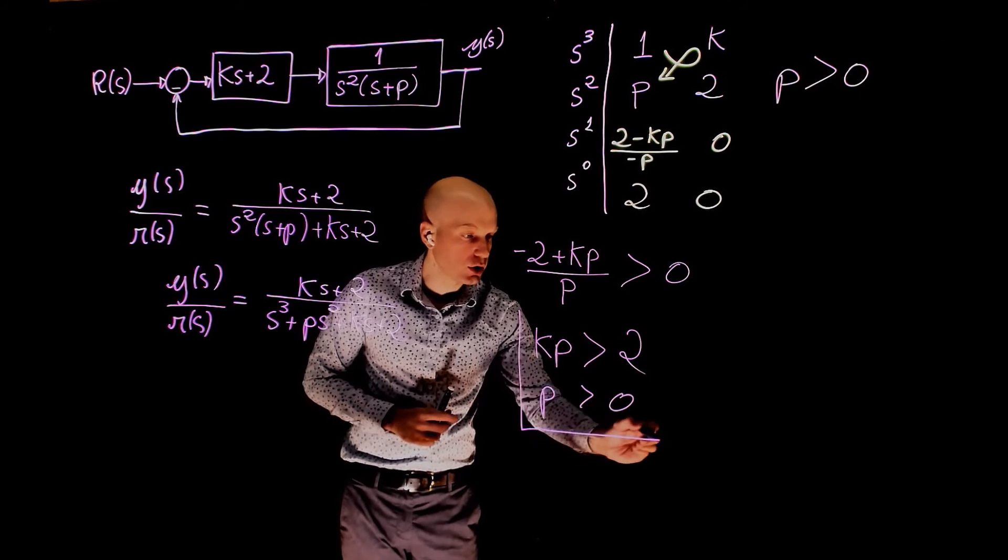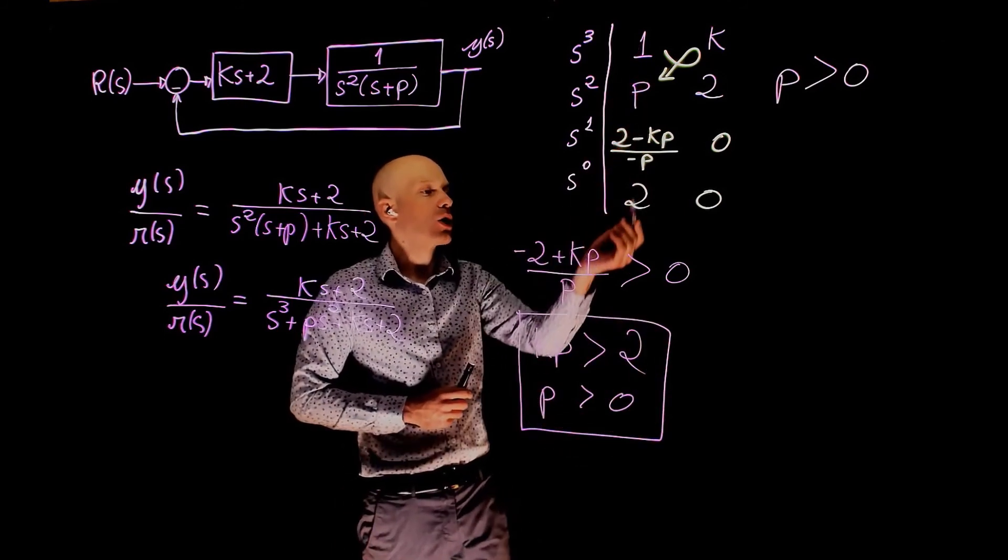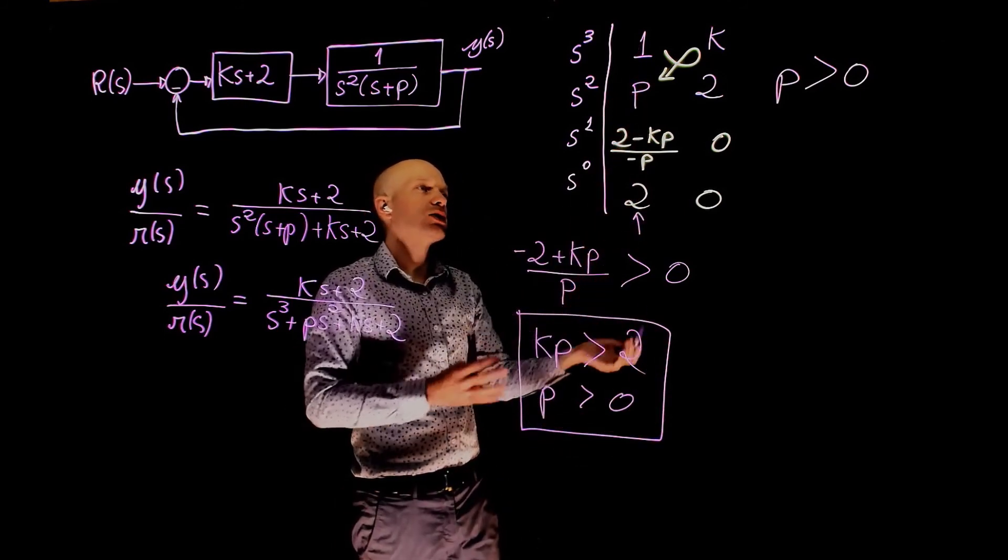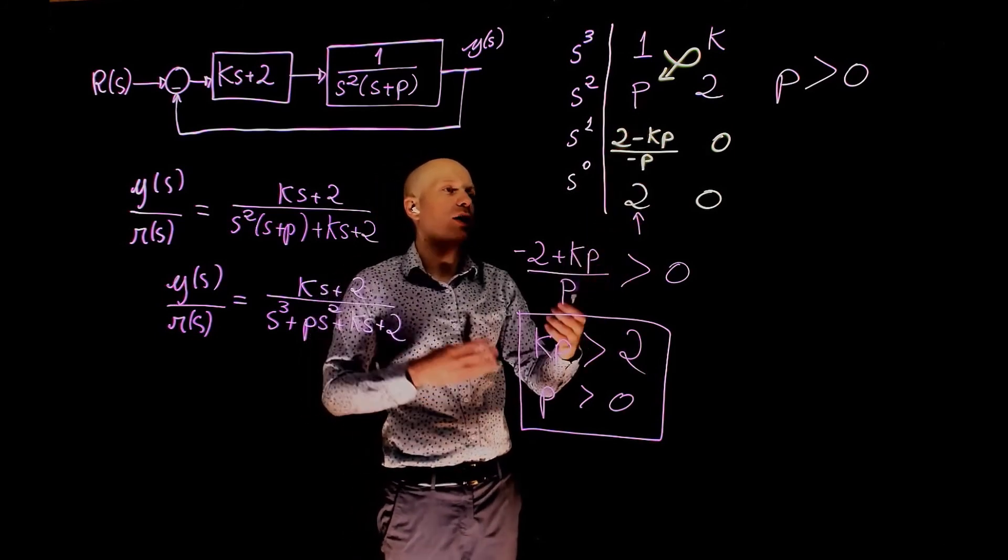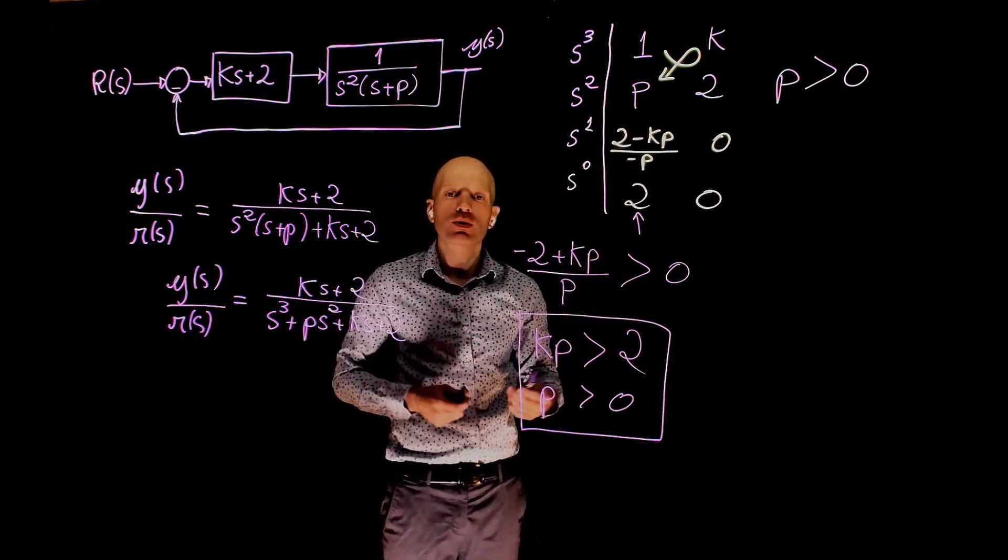If these two conditions are met, we see that in the first column here, there will be no sign change. Everything will be positive and the system is said to be closed loop stable.